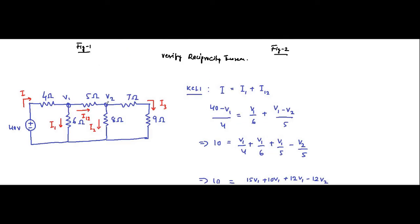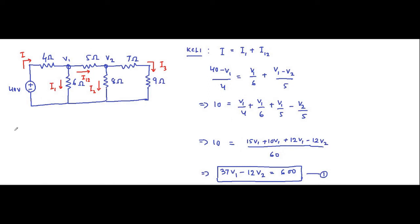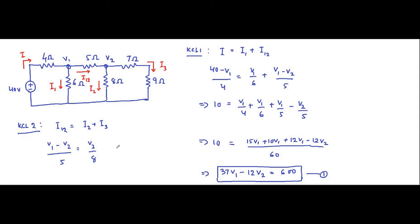Now applying KCL at node 2. At this node, i12 equals i2 plus i3. Here i3 is V2 divided by (7 plus 9), which is 16, so i3 equals V2 divided by 16.